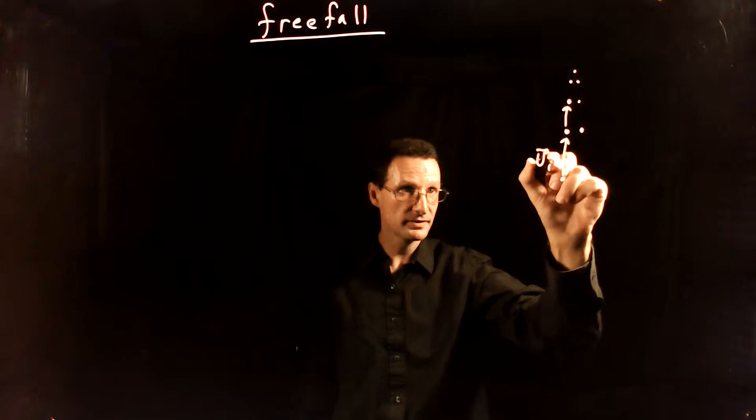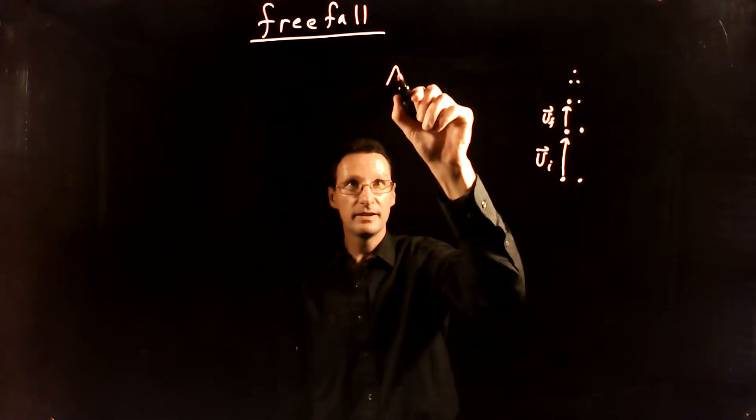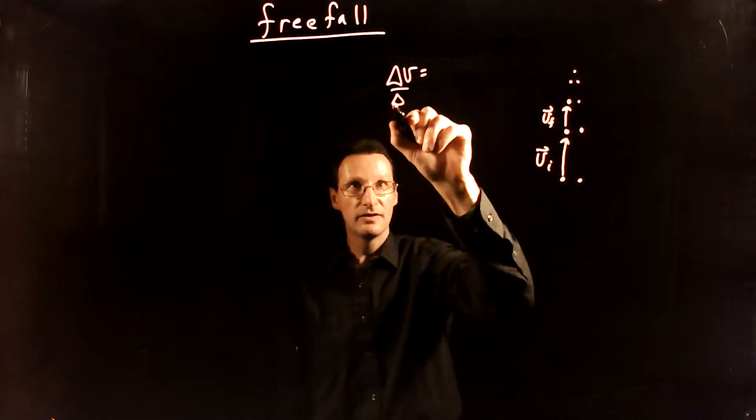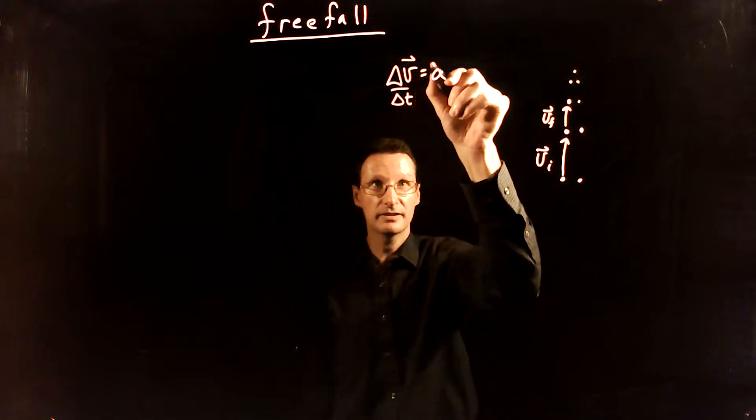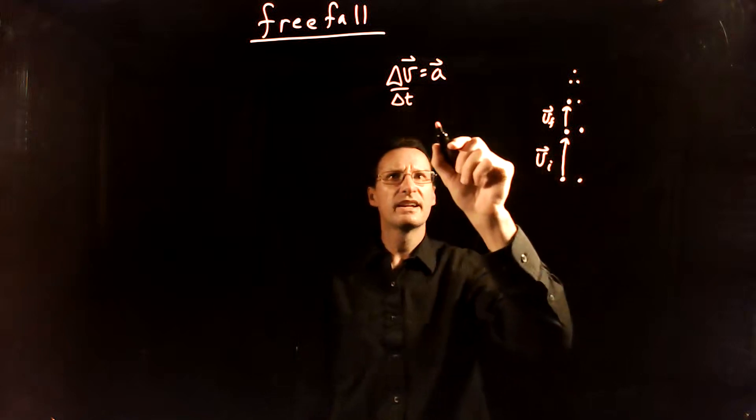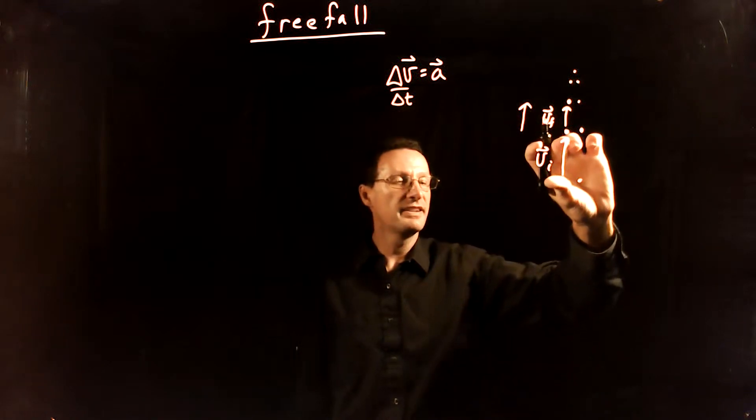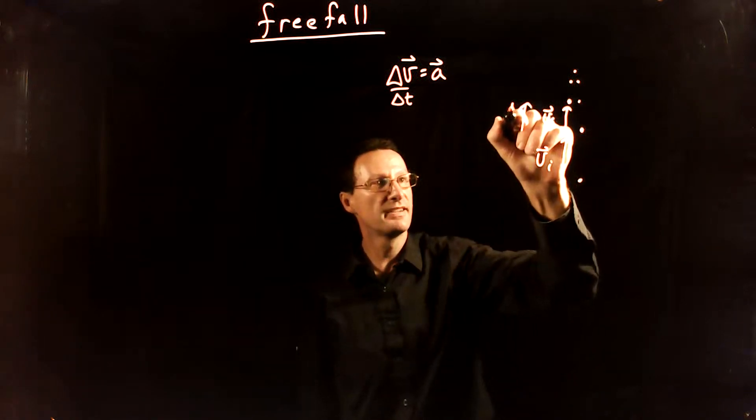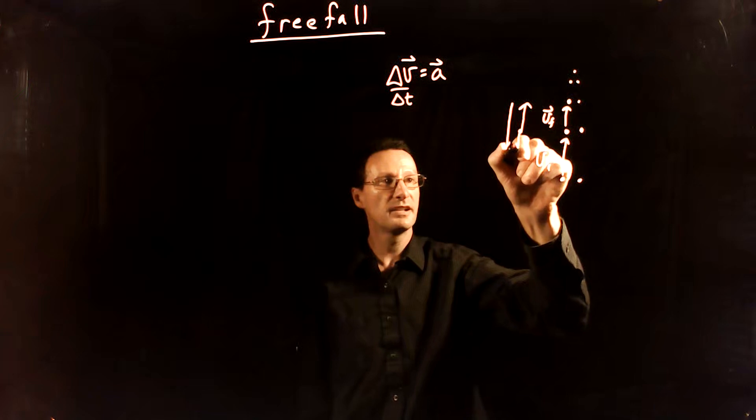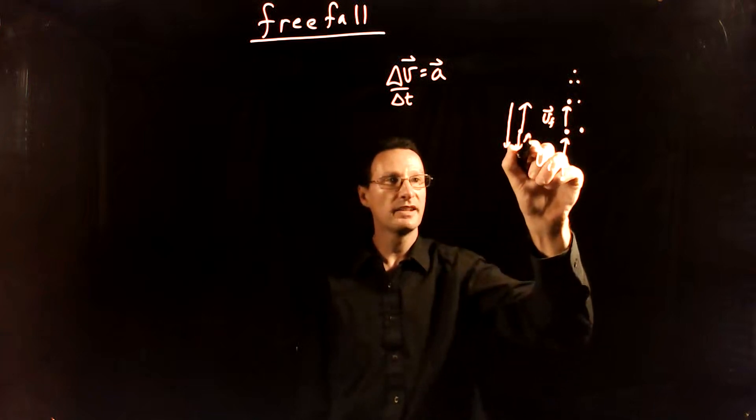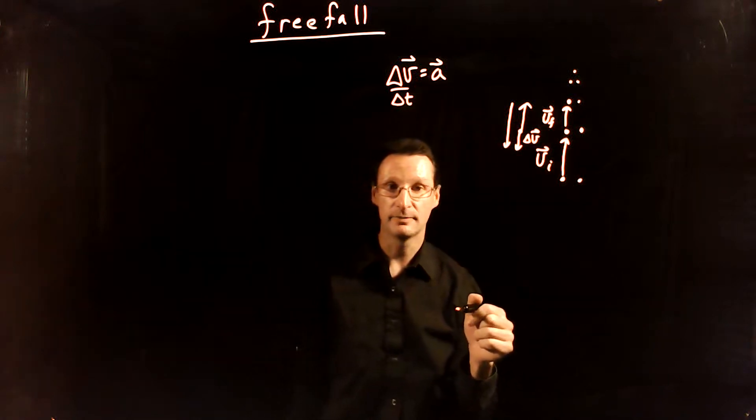So if we call this one our initial velocity and this one our final velocity, remember we want to find delta v, because delta v over delta t is the acceleration, and those are vectors. So we want to take final minus initial. We start with the final velocity and then we add to that the negative of the initial velocity, tip to tail like that. Then for the change in velocity vector, we start where we start and we end where we end, and so the delta v vector points down.